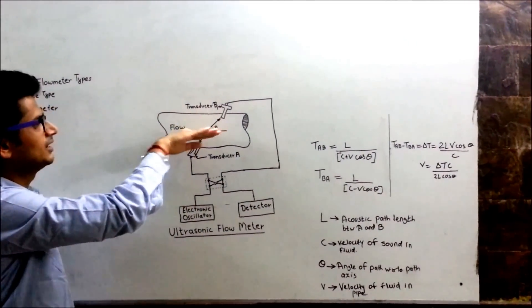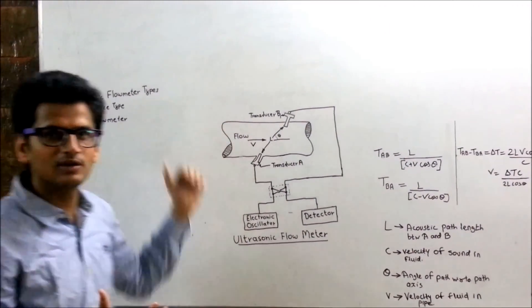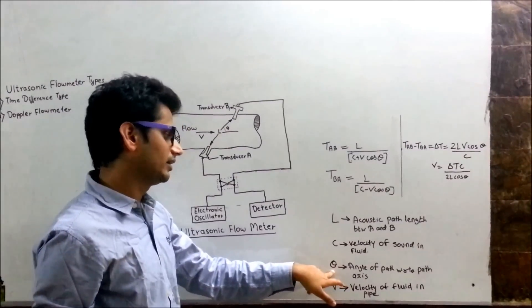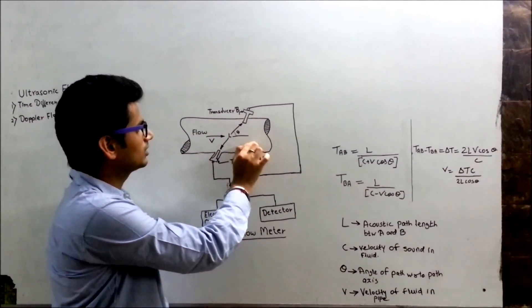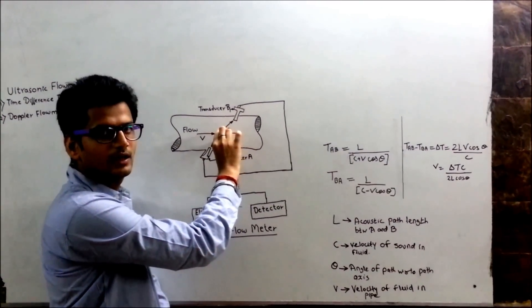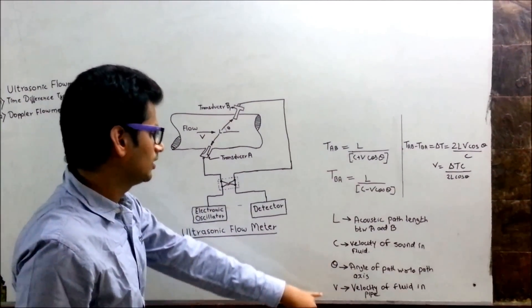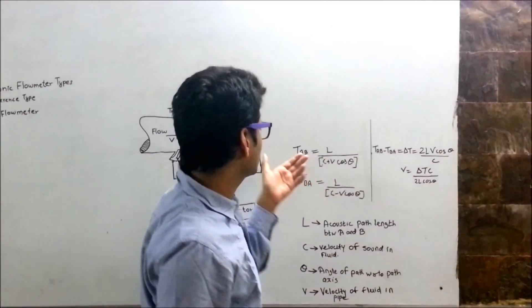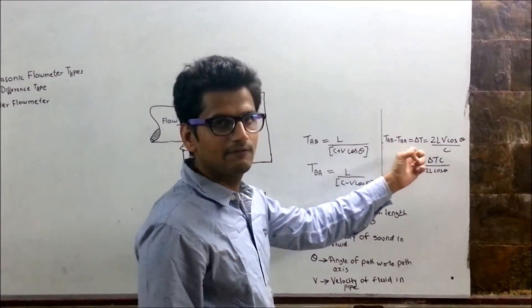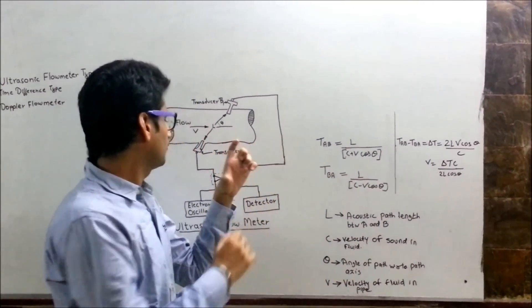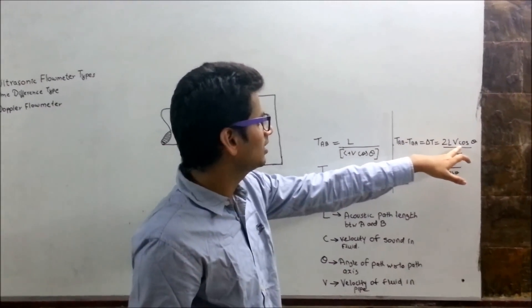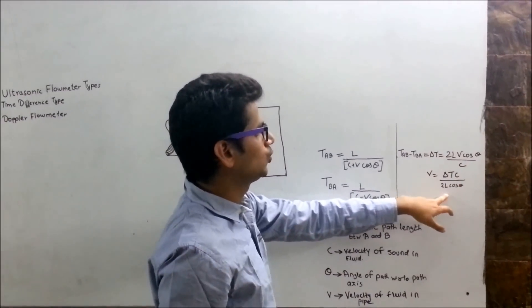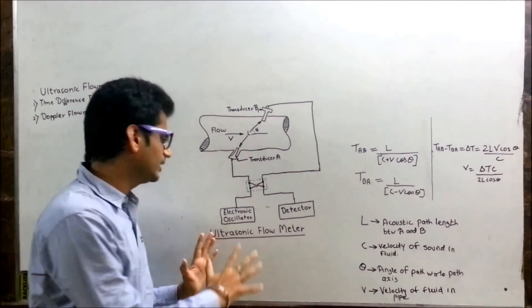And C is the velocity of sound. Because our fluid is flowing from here, there are various sounds produced, that is why we have to determine its velocity. Then there is an angle of theta. Now, we have TAB and TBA, if we take the difference between the fluid, we will get the total measurement of the fluid, which is 2L V cos theta upon C. But if we take V to this side, we will get delta T C upon 2L cos theta. So this is how basically ultrasonic flow meter works.